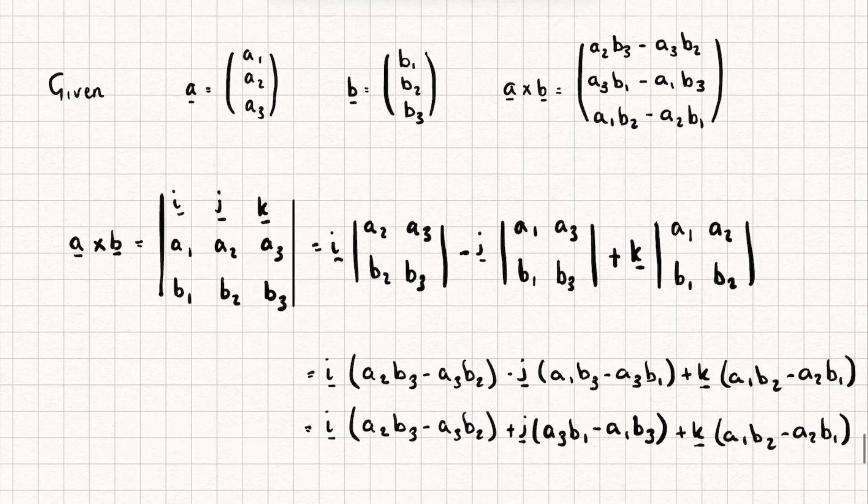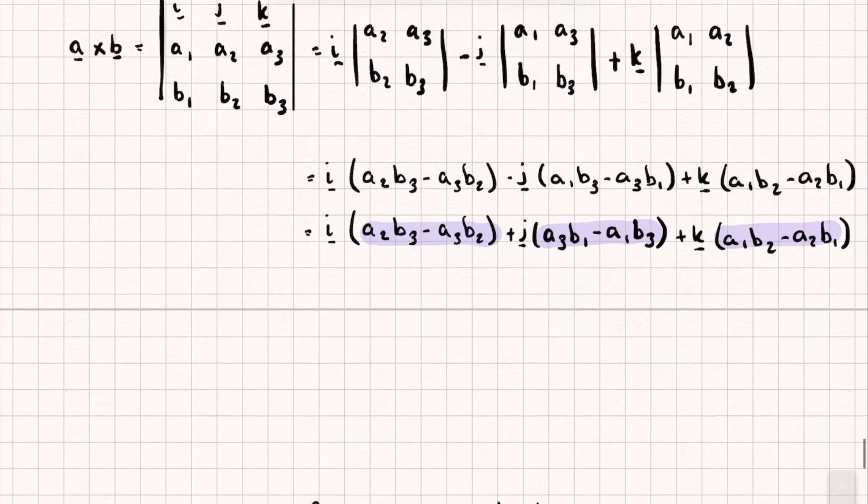Now let's check that this is the same thing. So we've got a₂b₃ - a₃b₂, that checks out, that looks pretty good. We've then got a₃b₁ - a₁b₃, that is also correct. And then a₁b₂ - a₂b₁, perfect. So this is an alternative way of calculating the cross product.